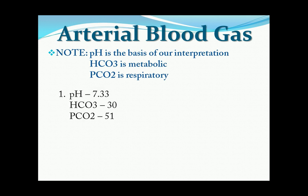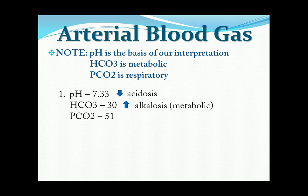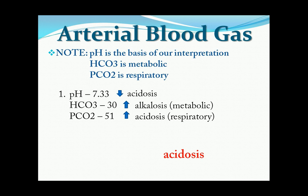Let's now proceed to example number 1. pH is 7.33, HCO3 is 30, PCO2 is 51. The pH is low, so it is acidosis. HCO3 is metabolic. PCO2 is high, so it is acidosis. Since pH is our basis of interpretation, our answer will be acidosis. The next step is to check HCO3 or PCO2 — which one is the same with the pH. In our first example, PCO2 is also acidosis, which we said is respiratory. Therefore, our answer will be respiratory acidosis.